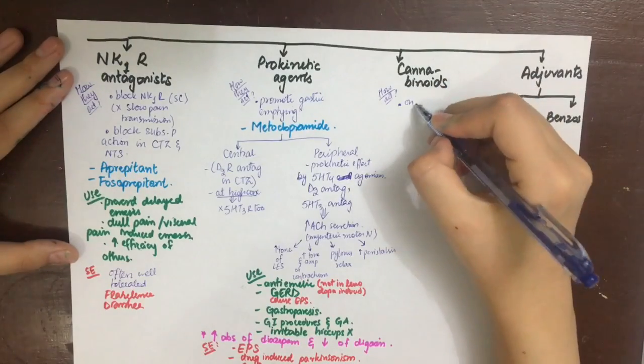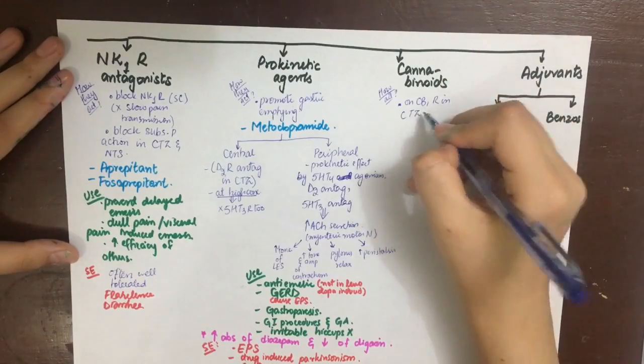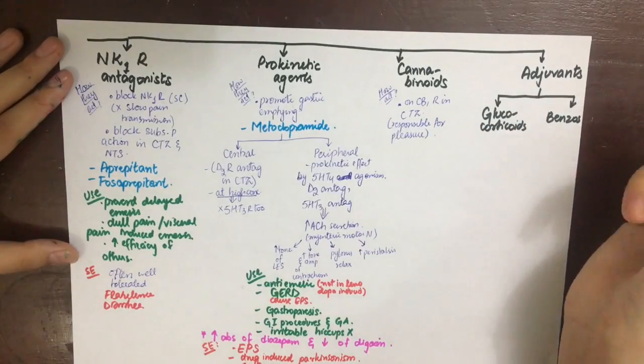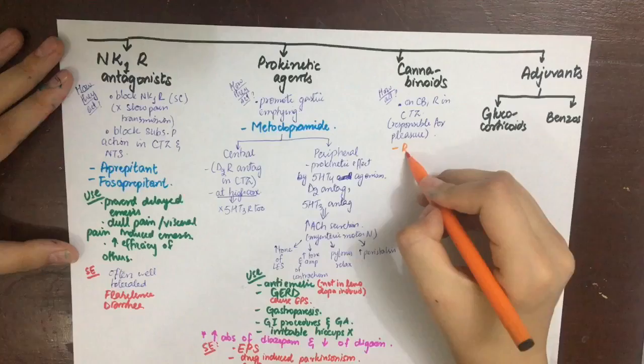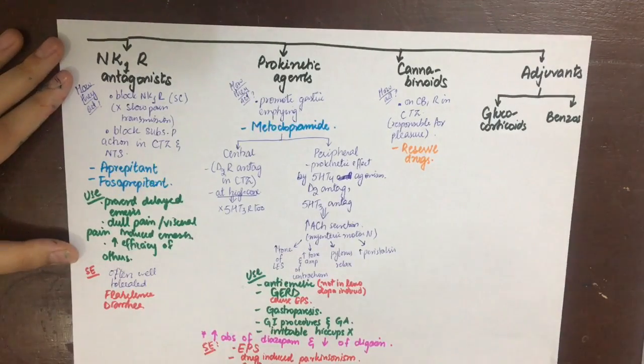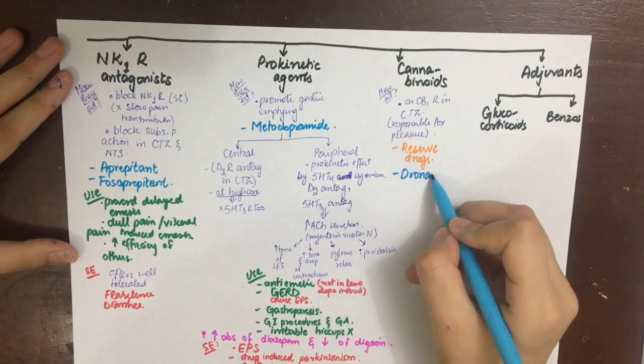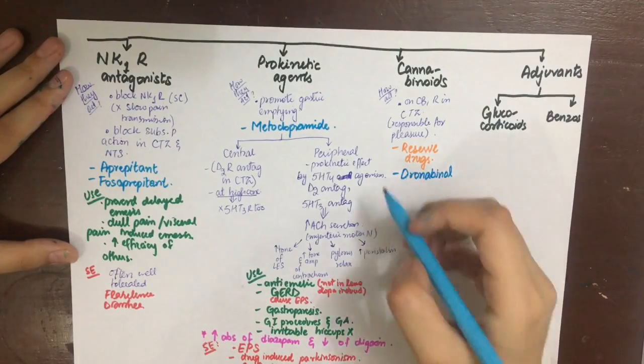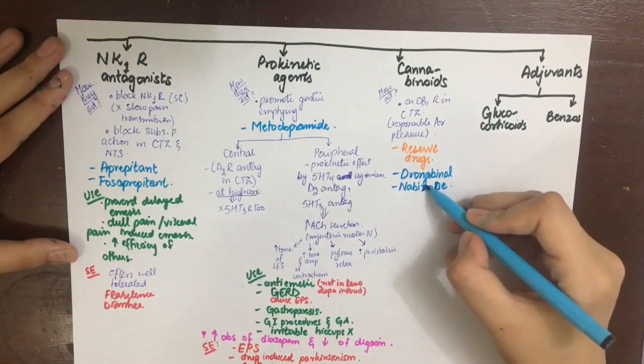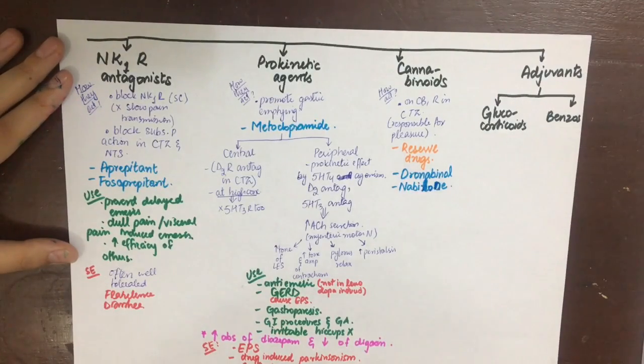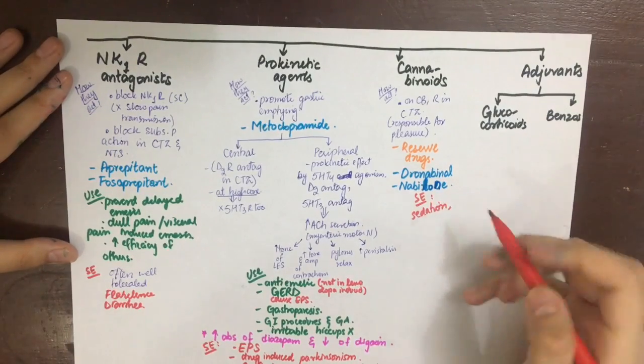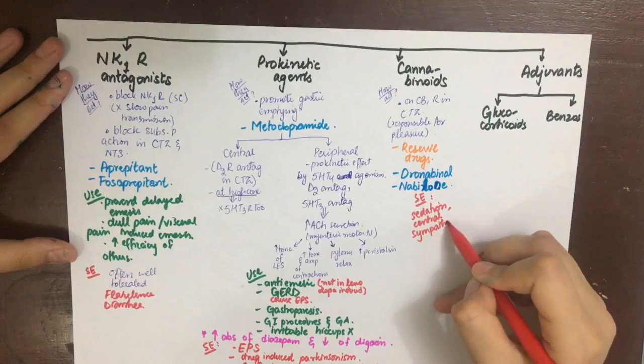Let's see how cannabinoids act. These are the last resort drugs when the patient does not respond to other antiemetics. They act on the CB1 receptors in the chemo trigger zone. These receptors are mainly responsible for pleasure, eating behaviors, and they improve mood. The two chief drugs are dronabinol and nabilone. They have serious side effects because they are drugs of abuse, derived from cannabis sativa or marijuana. Side effects are sedation, central sympathomimetic effects such as tachycardia, palpitation, hypertension, hallucinations, disorientation, and drug dependence.